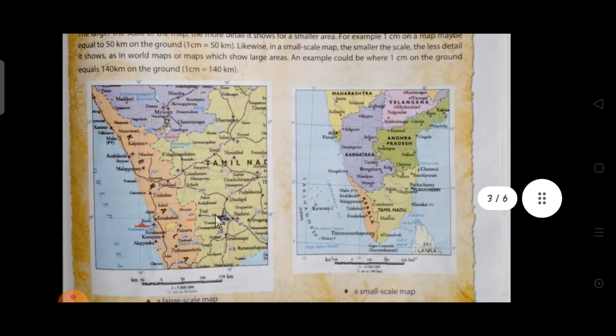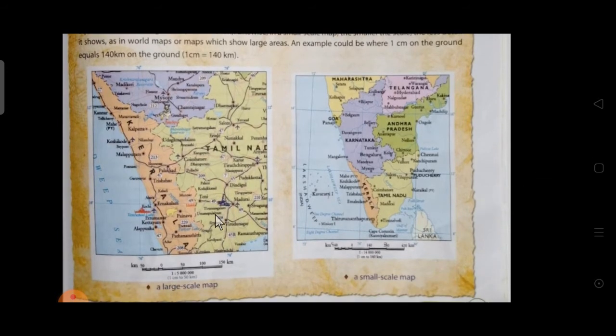Large scale maps give more detail of smaller areas, like one centimeter equals 50 kilometers. Small scale maps give less detail but cover the whole world. Here you can see Tamil Nadu with all details, whereas in small scale the distance is more but information is less. Large scale shows more information but smaller area.